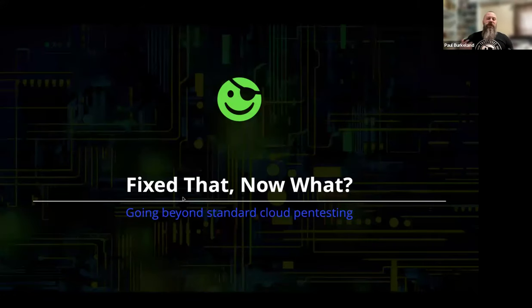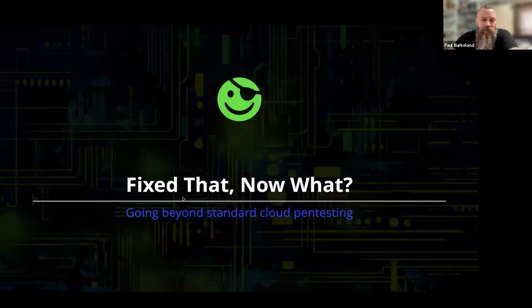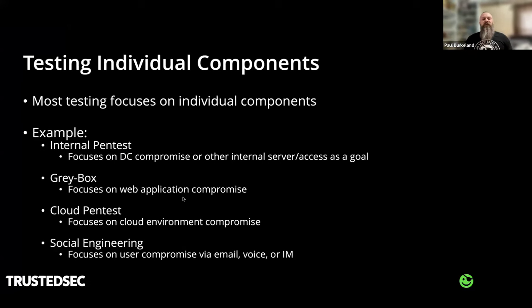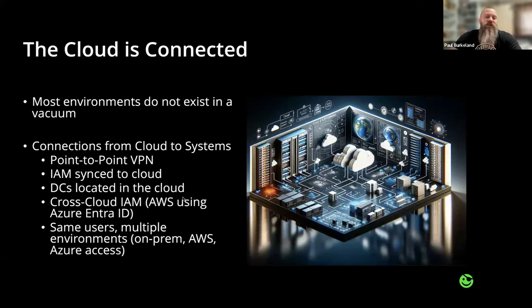Let's say you've gone through and done your pen testing and config reviews — everything's all in order. Now what? We've traditionally looked at testing individual components: an internal pen test focused on internal assets, a gray box focused on one application, a cloud pen test focused on the cloud environment, or social engineering. The problem is that in the cloud, everything is connected — it's not in an oasis on its own. There are many connections: VPN site-to-site between on-premises and cloud environments, IAM synced in hybrid setups, and infrastructure components like domain controllers and Exchange running in AWS or Azure.